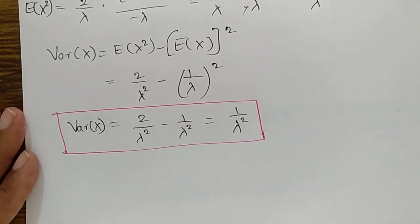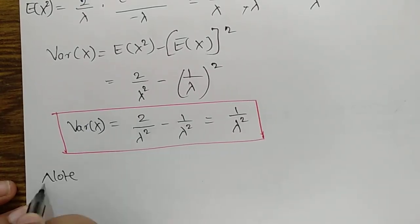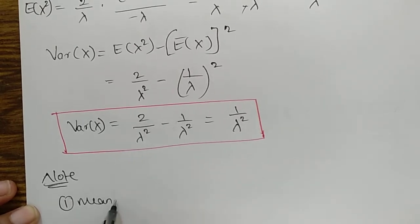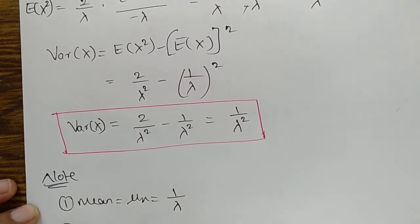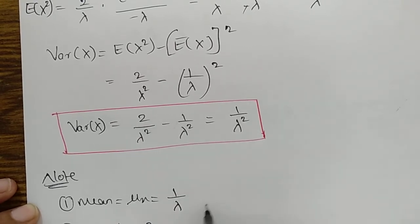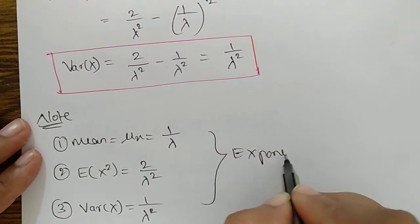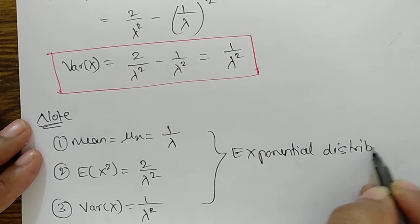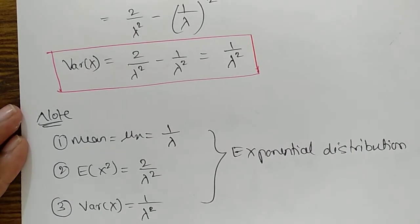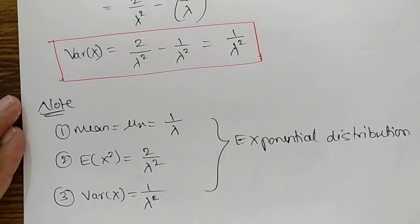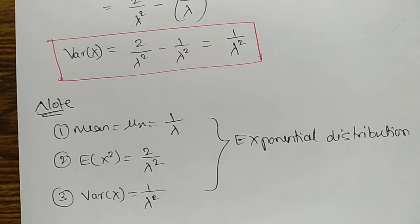To summarize today's session: the mean of the exponential distribution is μ_x = 1/λ, the second-order moment is E[X²] = 2/λ², and the variance is Var(X) = 1/λ². Using these three formulas we will solve problems in the next lecture session. Thank you.